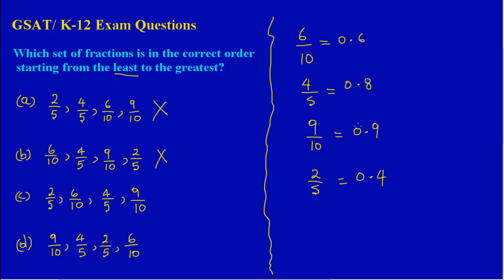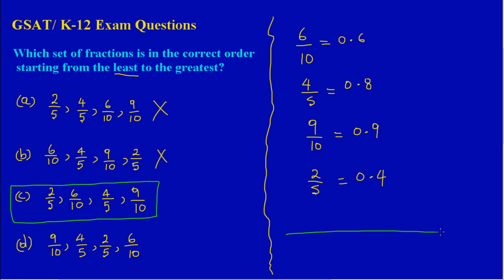Now let's check option C. Two-fifths is 0.4, six over ten is 0.6, four over five is 0.8, and nine over ten is 0.9. These are in order from smallest to largest — 0.4, 0.6, 0.8, 0.9 — so option C is our answer.